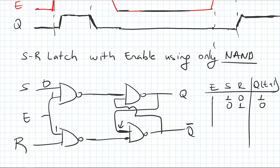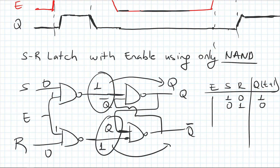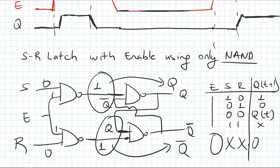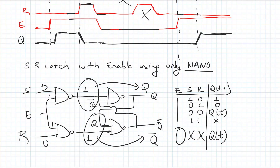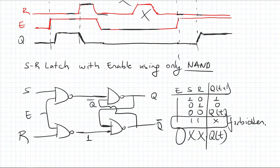If S=0 and R=0, I have a one here and one here, so I have Q and Q-not preserved — I am not changing my state, so this is the hold state giving Q(t). S=1, R=1 is the forbidden state. If the enable is zero, I don't care about S and R — this will also be a hold state. This is the complete function table for this NAND SR latch, with the forbidden state identified.